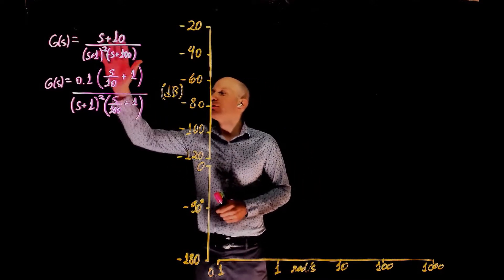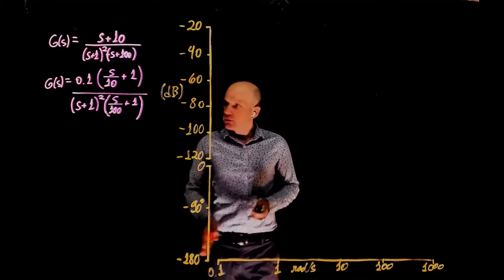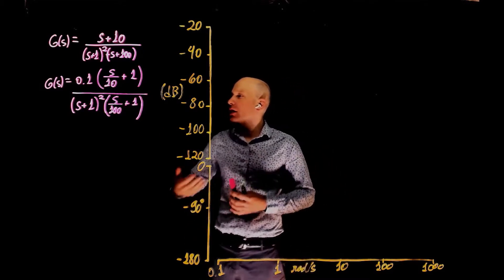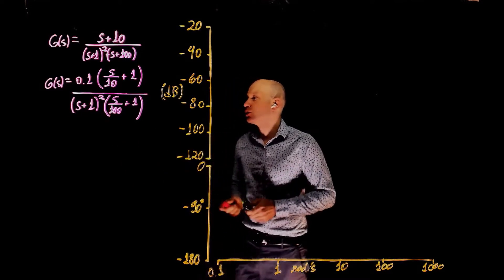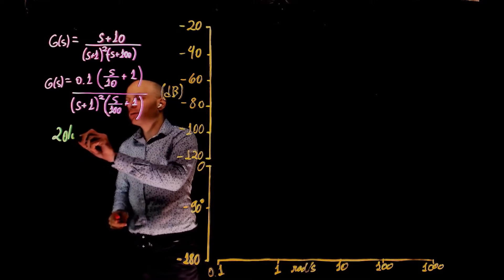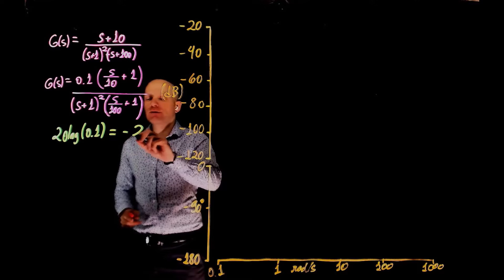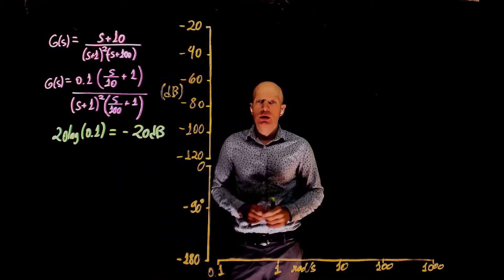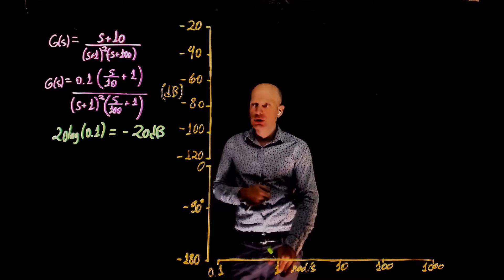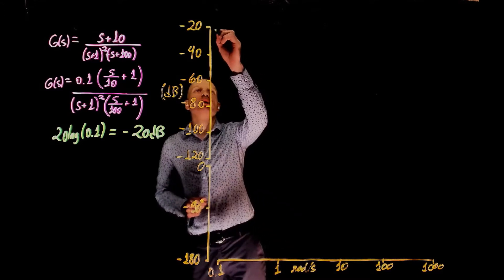Here we have the original function, and here is the function written in the standard form needed for the Bode plot. Looking at very low frequencies, to the left of all cutoff frequencies, the only thing acting on the Bode plot is the gain 0.1. So the gain at very low frequencies is 20 log of 0.1, which is negative 20 dB. The gain is negative 20 dB from 0.1 up to the first cutoff frequency at 1 rad/s.